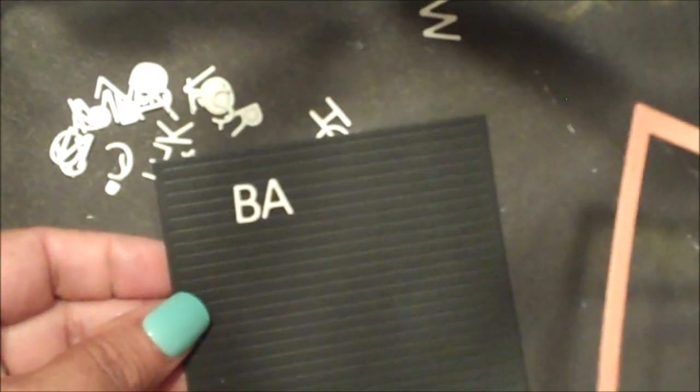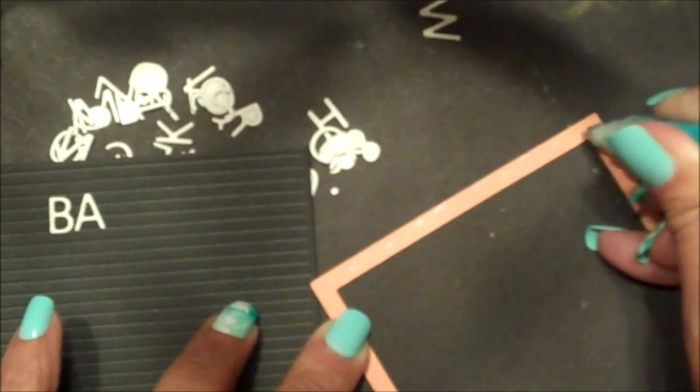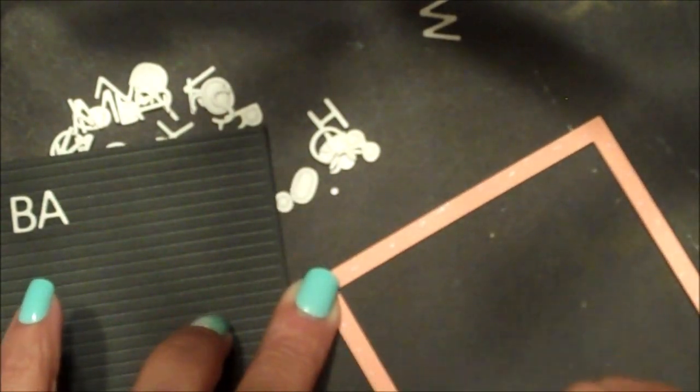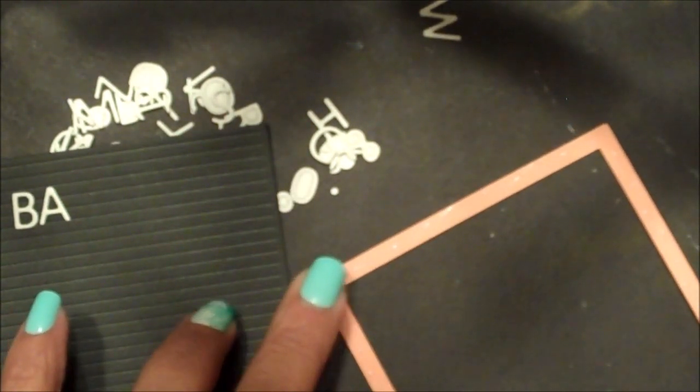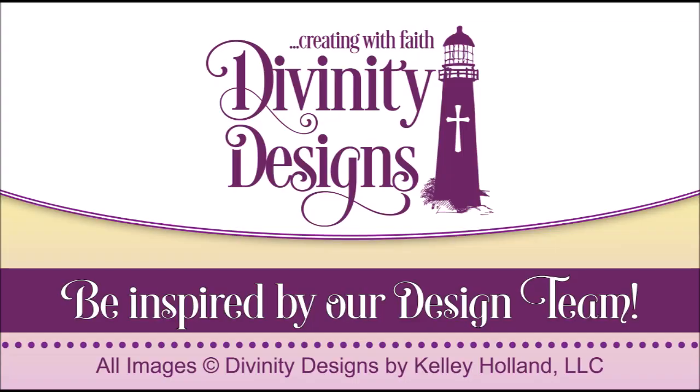After adding all the letters to your letter board, add adhesive to the frame. Then place that die cut frame over the letter board.